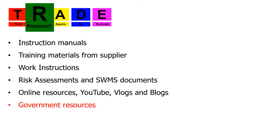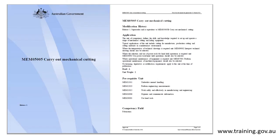Are there any government resources available to help deliver this workplace training? The Australian Government outlines what skills and knowledge are associated with certain units of competency. The cutoff saw is covered in MEM05005, which some first-year apprentices would have completed. Although overkill for general workplace training, it does provide a structured, recognized format. These unit description documents can be downloaded from www.training.gov.au for free — pause the video now or take a screenshot to record the web address.